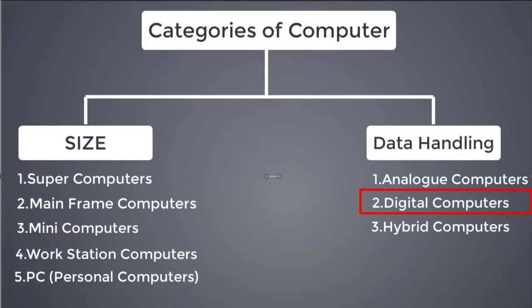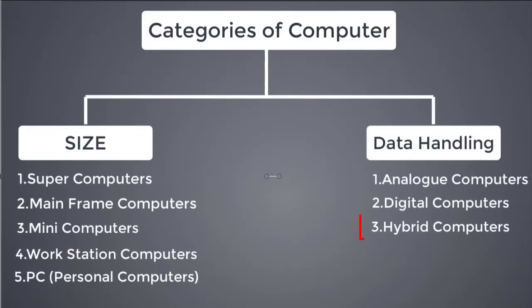The next type is Digital computers. Digital computers process data using a binary code system — that is, 0 and 1. Examples of digital computers include smartphones and modern computers. These are the most commonly used computers today.